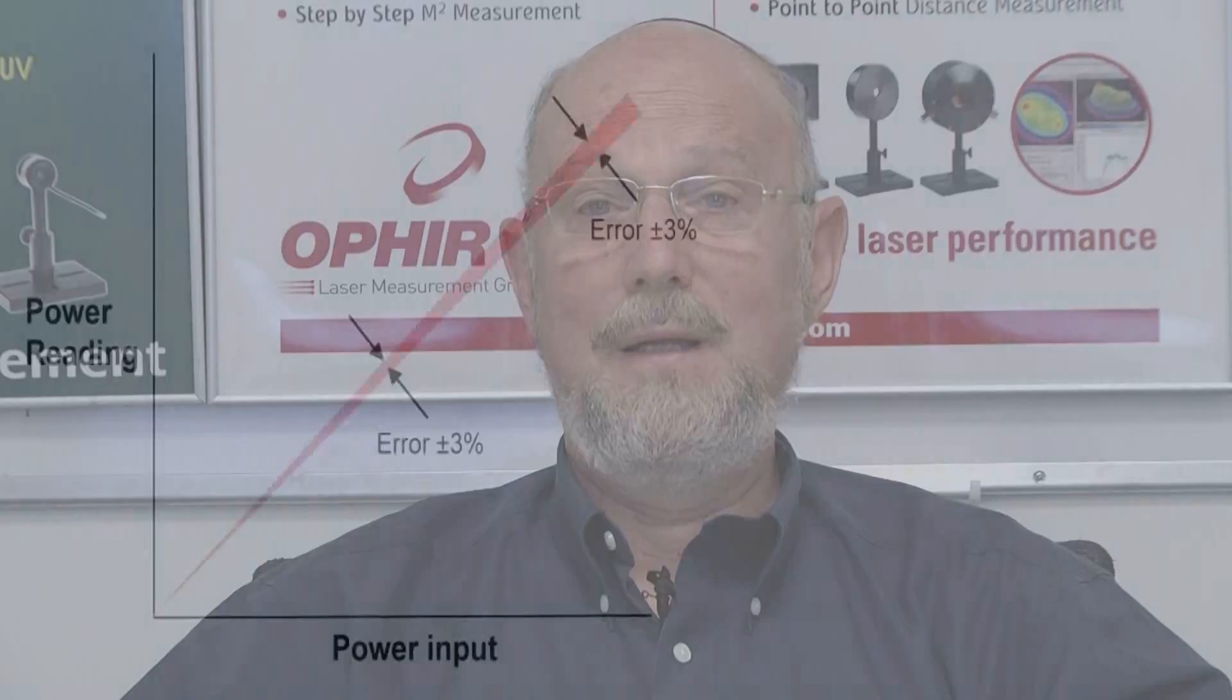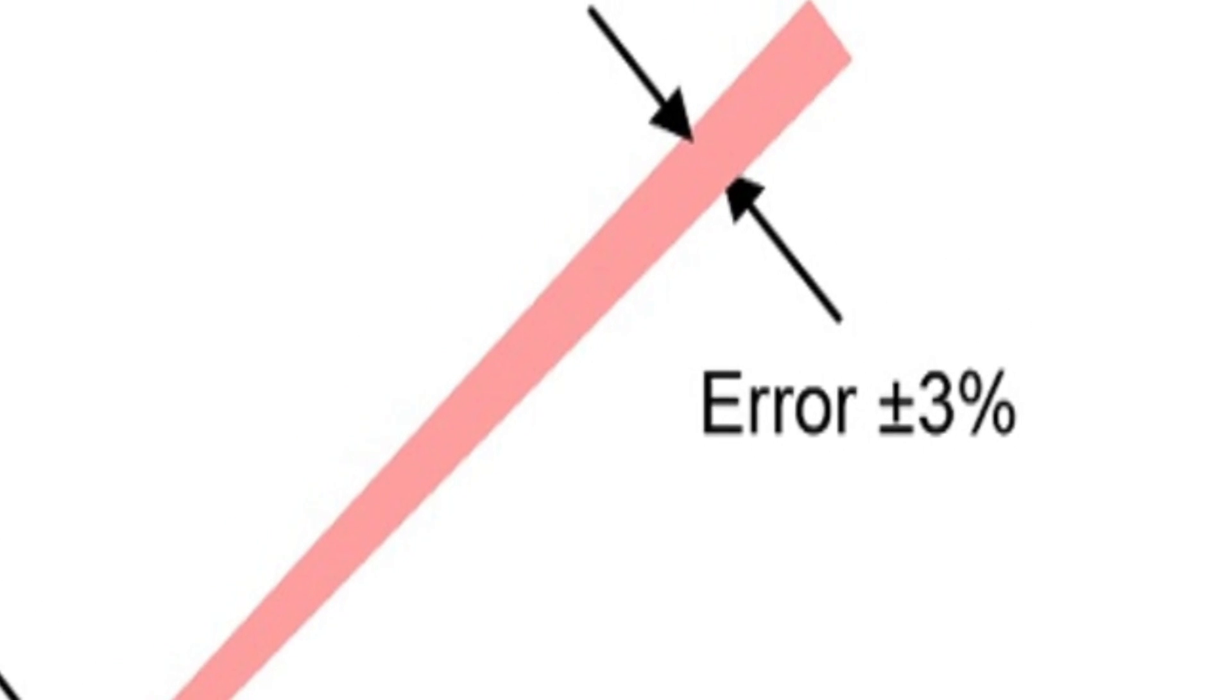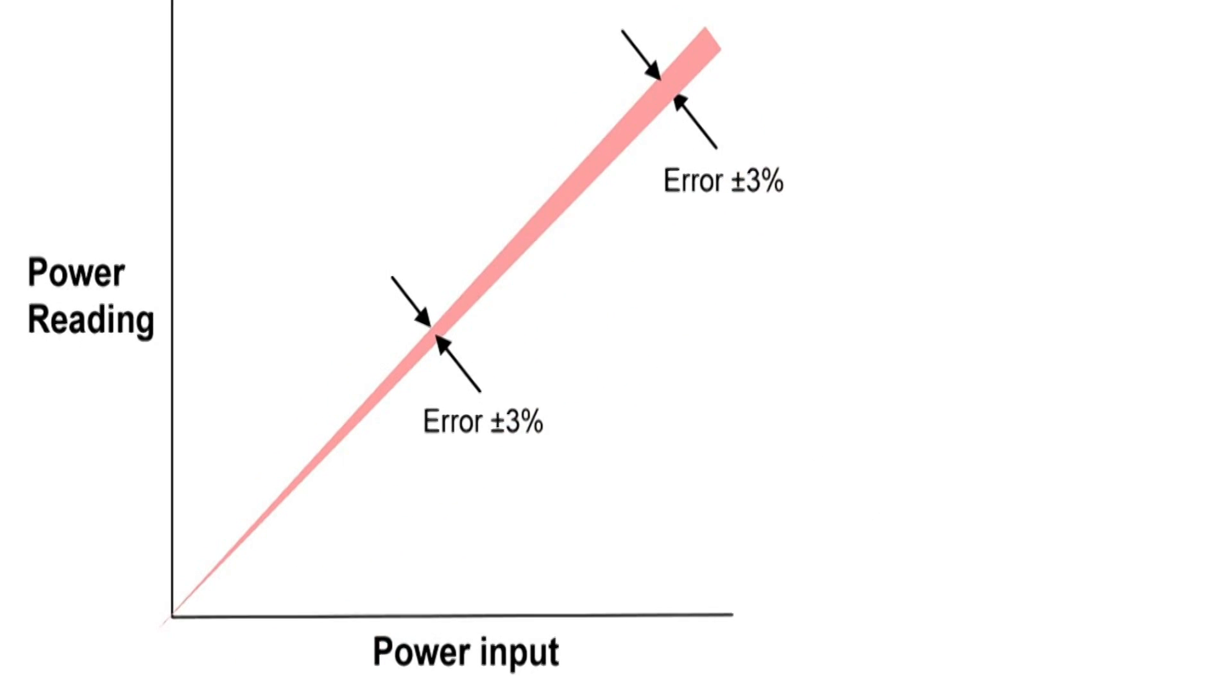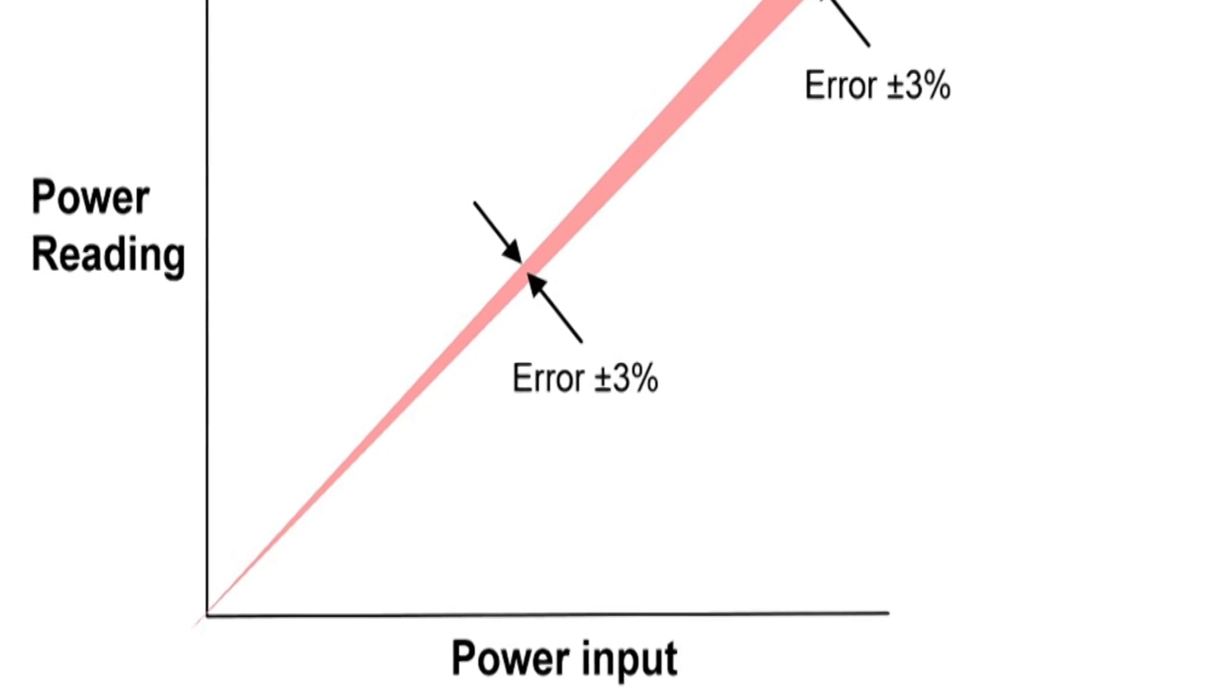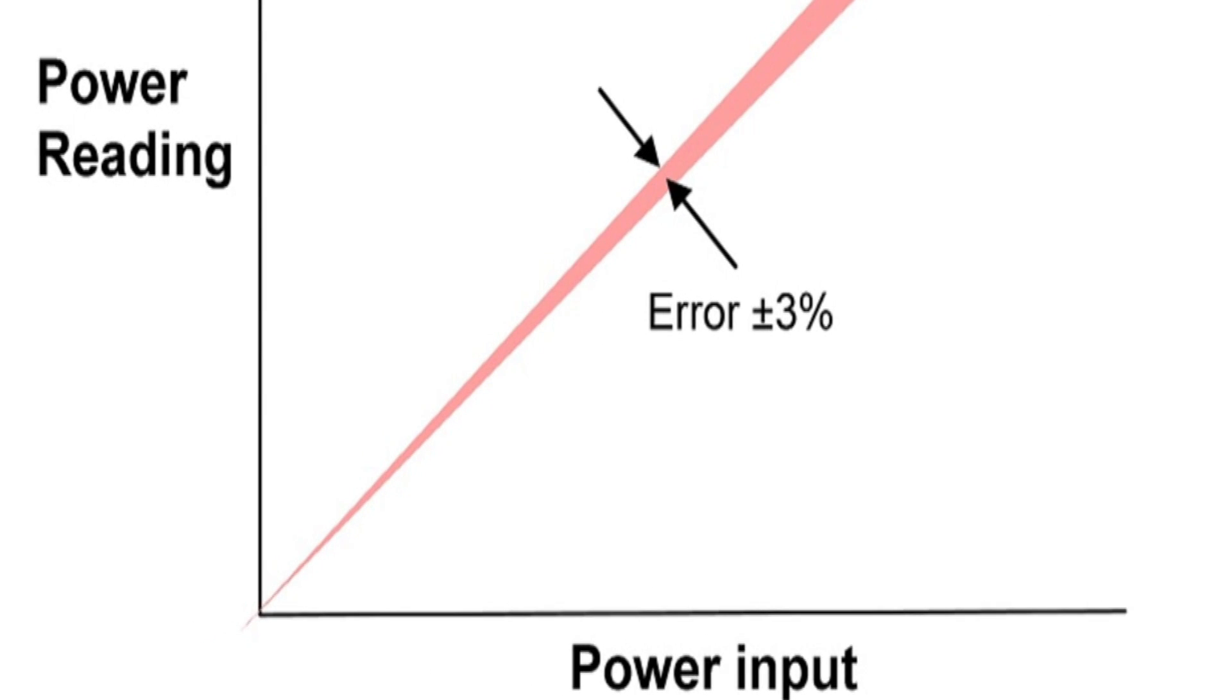Let's look at this graphically. If we're reading a high power, then we see a larger error which is still plus or minus 3% of the reading. If we're reading a lower power, we still have plus or minus 3% error in the reading, but it is a smaller value.